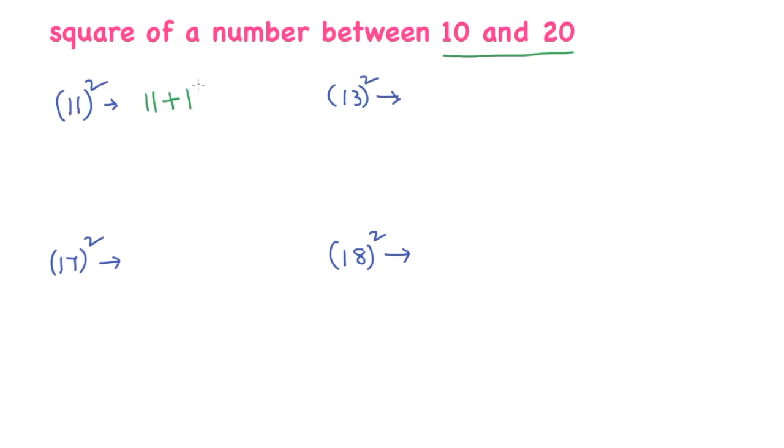Okay, now I'll square this number. What is 1 square? 1 square is 1. 11 plus 1, 12. See, 11 square is 121. It's very easy.